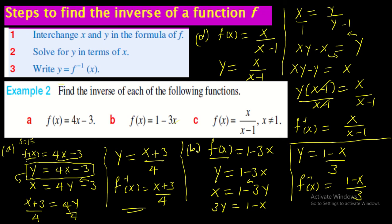For example (b): f(x) = 1 - 3x. Write f(x) as y, then exchange: x = 1 - 3y. Shift -3y to the left: 3y = 1 - x, then shift x to the right side. Divide both sides by 3: y = (1 - x)/3. This y is the inverse of x, so we are done.